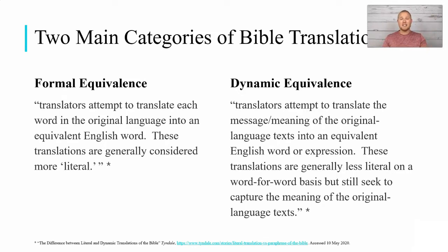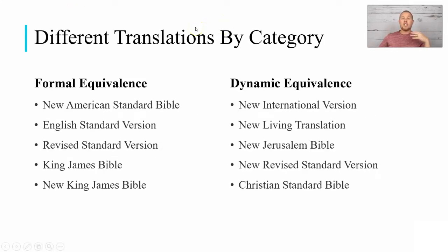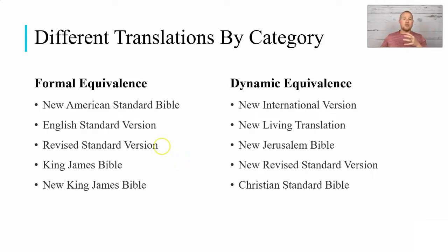There are pros and cons to both types of translations, which we'll get into as we discuss which Bible translation to use for studying. These are the two main camps of Bible translation. For formal equivalence, some popular translations include the New American Standard Bible, English Standard Version, Revised Standard Version, King James, and New King James. For dynamic equivalence — more of a thought-by-thought translation — popular options include the New International Version, the New Living Translation, the New Jerusalem Bible, the New Revised Standard Version, and the Christian Standard Bible.